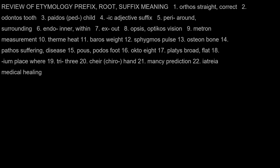Review of etymology — prefixes, roots, and suffixes with meanings: ortho (straight, correct), odontos (tooth), paedos/ped (child), -ic (adjective suffix), peri- (around, surrounding), endo- (inner, within), ex- (out), opsis/optikos (vision), metron (measurement), therm (heat), baros (weight), sphygmos (pulse), osteon (bone), pathos (suffering, disease), pos/podos (foot), octo (8), platys (broad, flat), -eum (place where), tri- (3), cheir/chiro (hand), -mancy (prediction), iatria (medical healing).